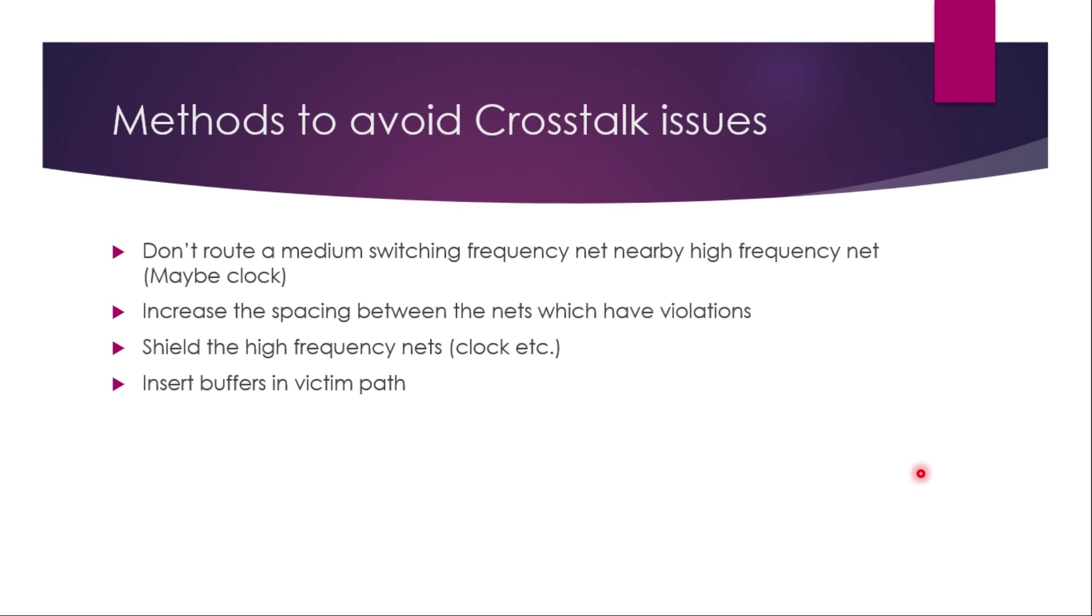How do we avoid the crosstalk issues? There are a few techniques. Don't ever route a medium switching frequency net, any signal net nearby a high frequency net. Usually, clock will be very high frequency net. Second is increase the spacing between the nets which have violations. If we have timing violations because of noise, then we can move the victim nets away from the highly switching nets. Third is shielding the high frequency nets, which are usually clock nets.